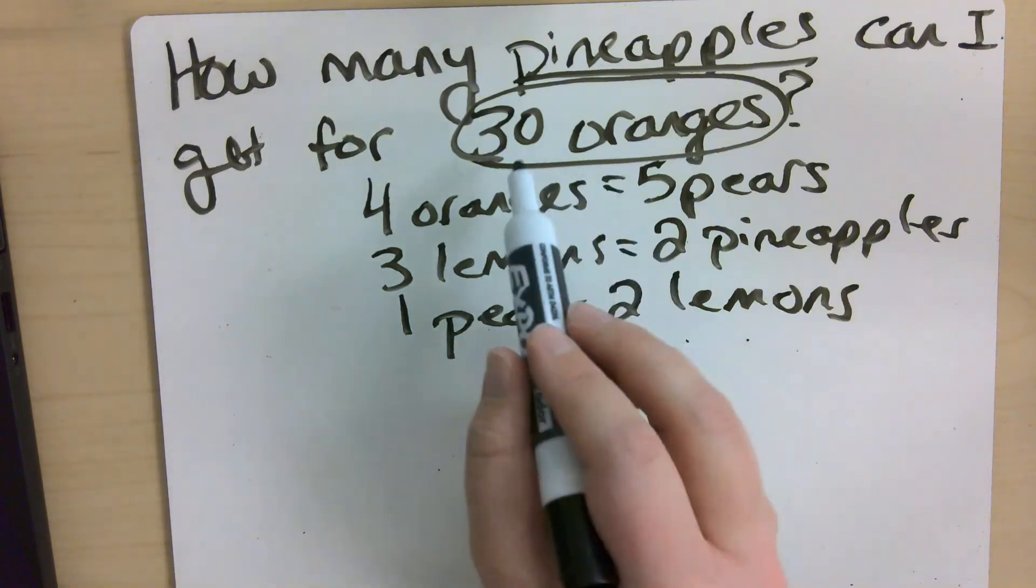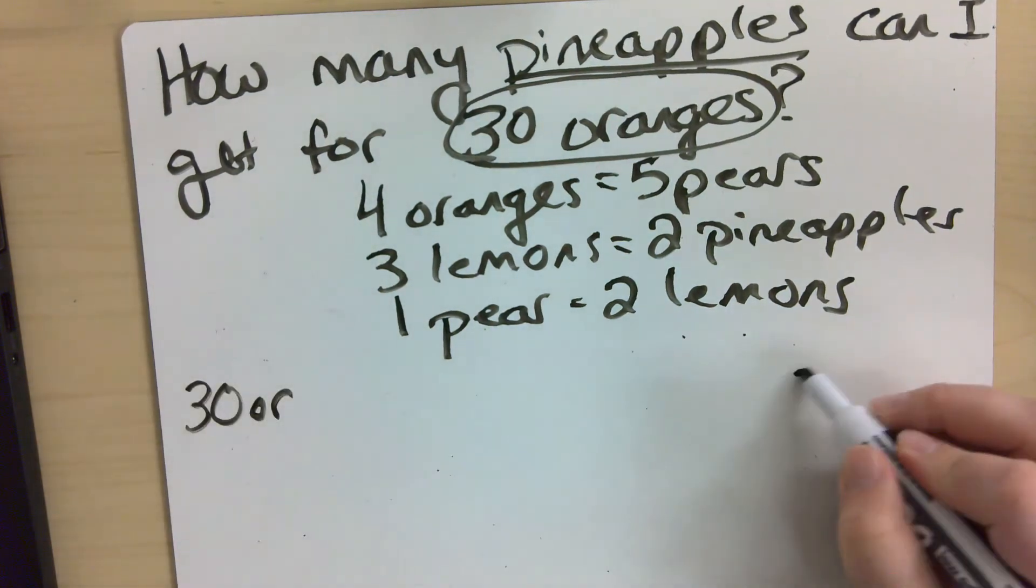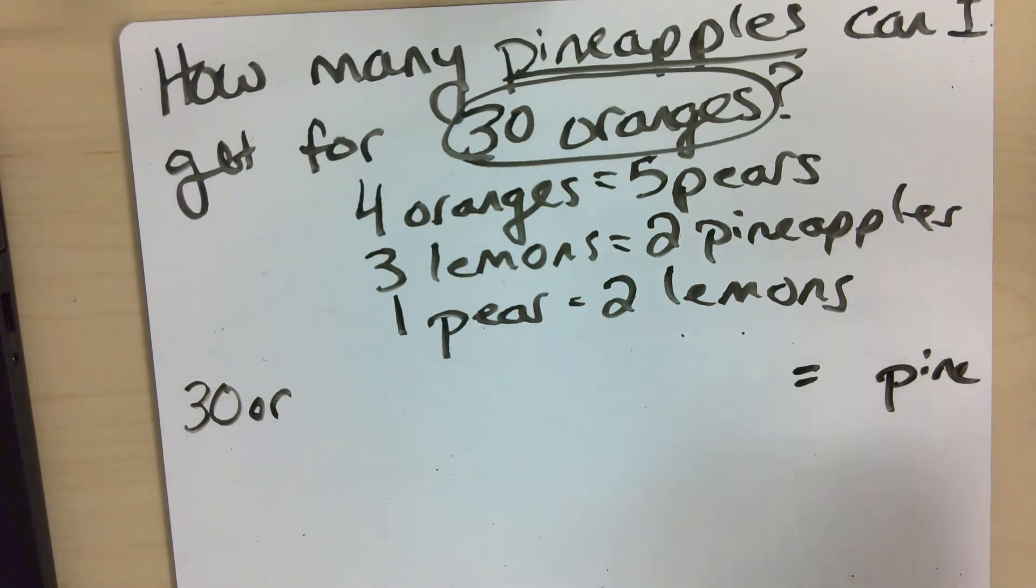All right, so I'm going to start by writing what I'm given. I have 30 oranges and I want pineapples. I'm going to abbreviate those a little bit to save myself space.